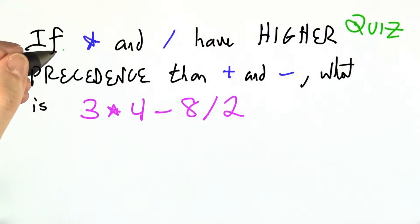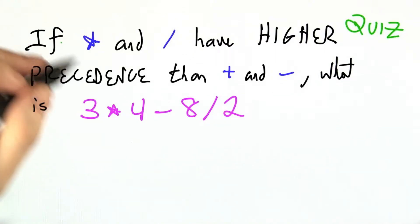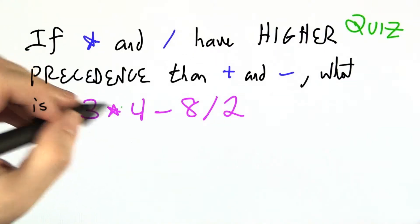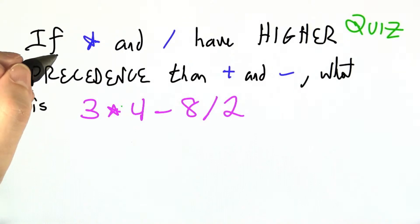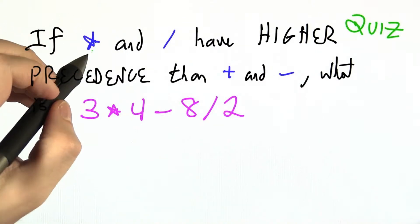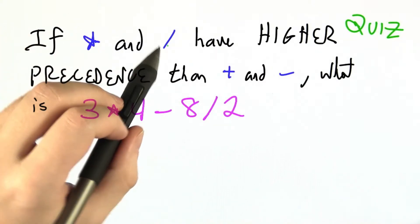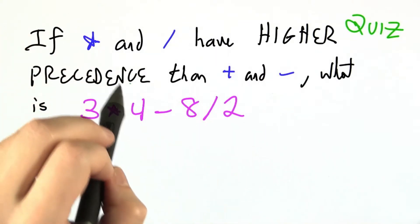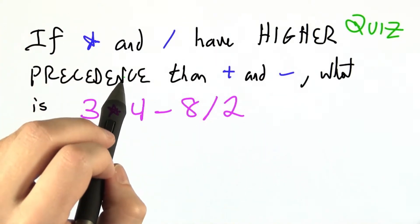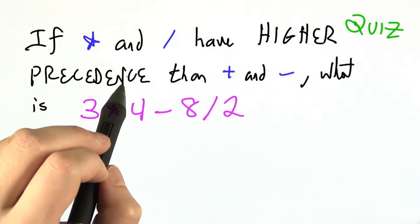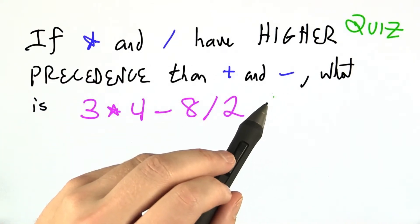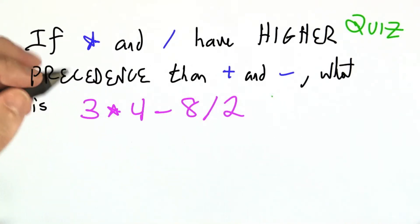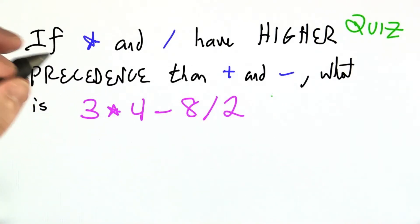Just to make sure that we're all on the same page about precedence and the difference between precedence and associativity, let's say that multiplication and division have higher precedence — that is, you should do them first — compared to addition and subtraction. And this is how we normally do things.